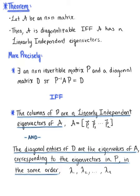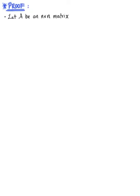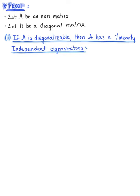So we need to go ahead now and verify that this theorem holds true. Here's our proof. We want to let A be an n by n matrix, and we want to let D be a diagonal matrix. Because we have an if and only if statement, we're going to need to use proof by cases. So case one: if matrix A is diagonalizable, then matrix A has n linearly independent eigenvectors.